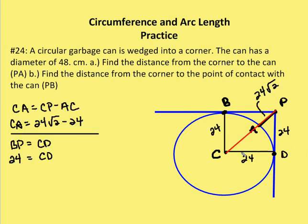If I draw two radii — one from C to B and the other from C to D — they're both congruent and equal to half the diameter, which is 24. I've also created right angles of 90 degrees. So that leaves us with a rectangle B, C, D, P. Drawing the length C to P, and since C to D and D to P are both 24, I know I have a 45-45-90 right triangle. So CP is going to be 24 root 2. And now I need to figure out what AP is. I know AC is 24 — it's just the radius. So the length of AP is CP minus CA, or 24 root 2 minus 24.